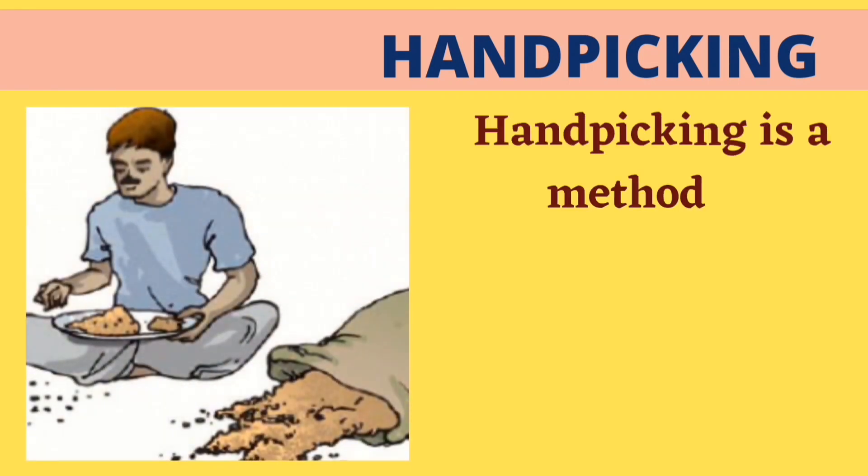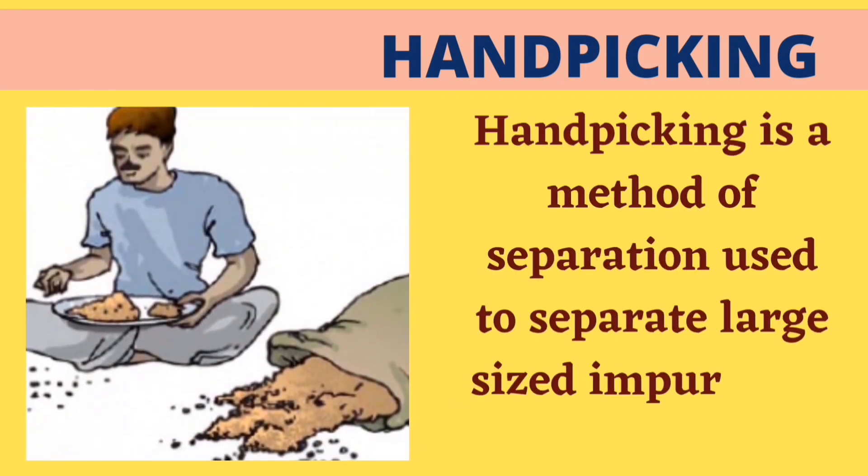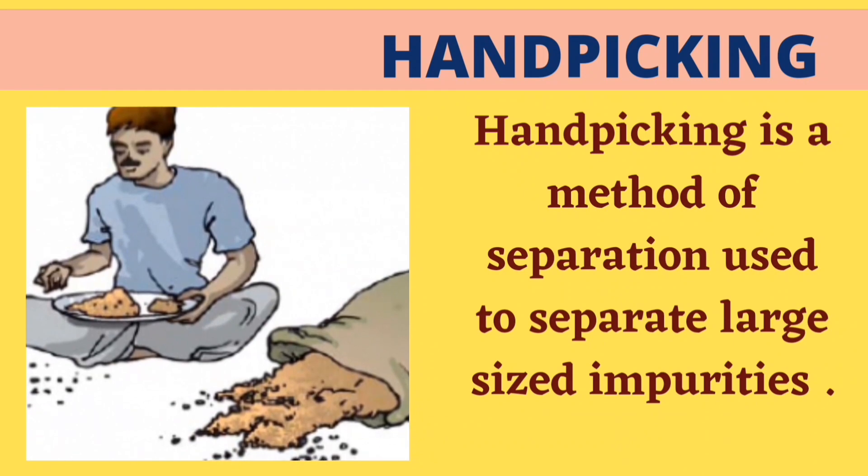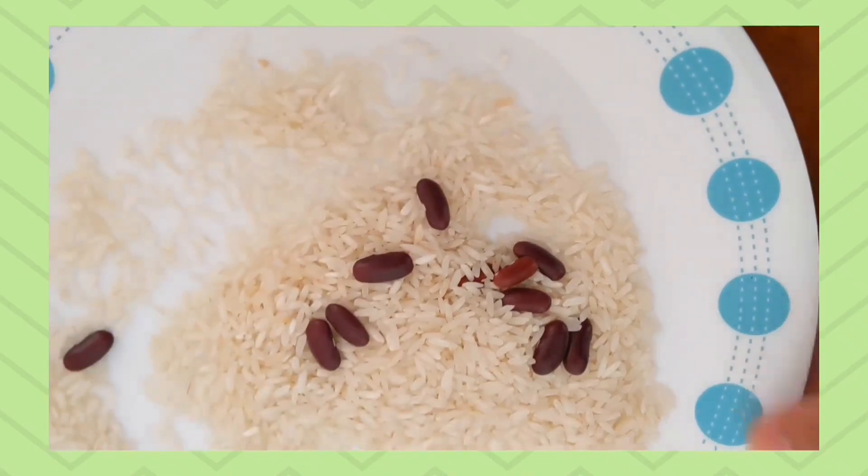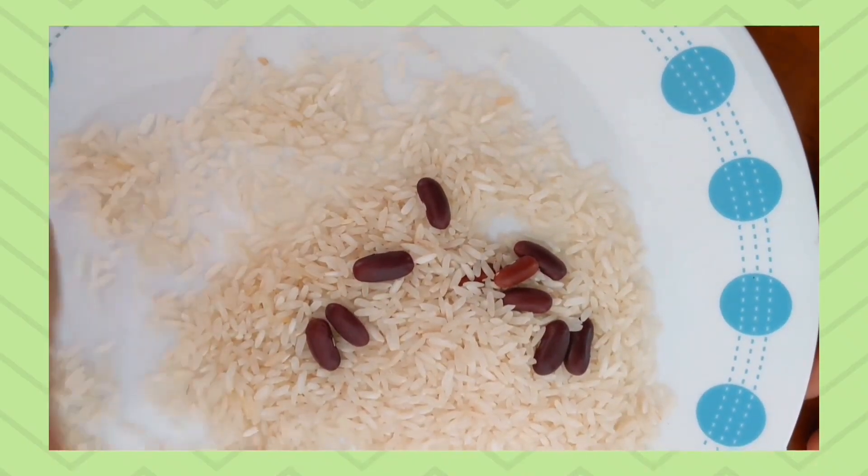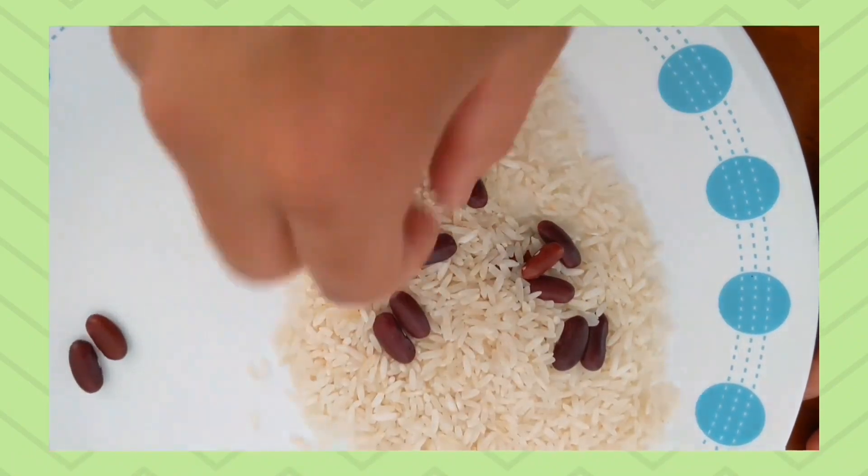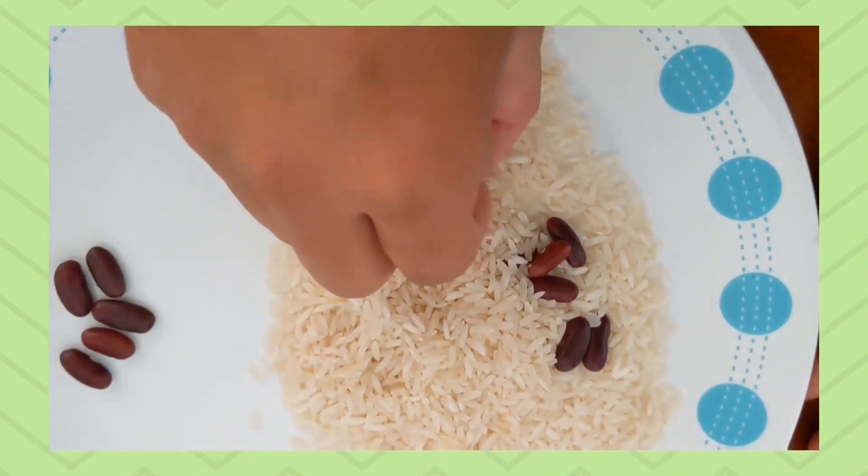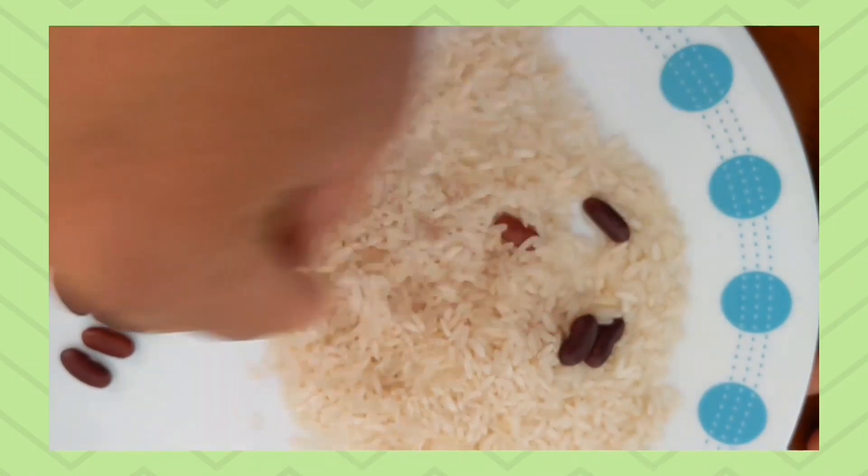Hand picking is a method of separation by using hands. It is used to separate slightly larger size impurities like pieces of dirt, stone, or husk from wheat, rice, or pulses. Hand picking is convenient when the quantity of impurities is not very large.